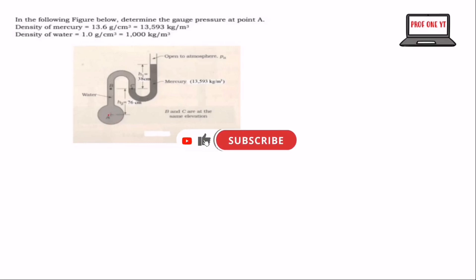We need to find the absolute pressure at A, and after finding the absolute pressure at A, we subtract that from the atmospheric pressure, which would give us the gauge pressure. So let's see how we're going to do it.